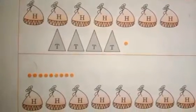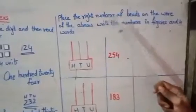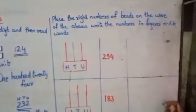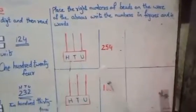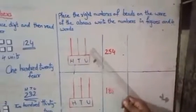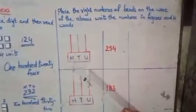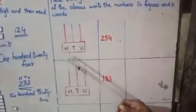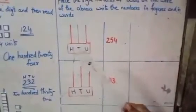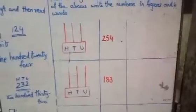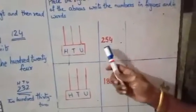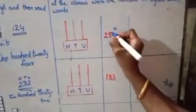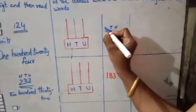Place the right number of beads on the wire of the abacus, then write the number in figures and in words. I have drawn three lines representing the wires, labelled H, T, and U — H means 100, T means tens, and U means unit. The number given is: 4 in the units place, 5 in the tens place, and 2 in the hundreds place.